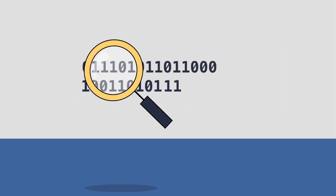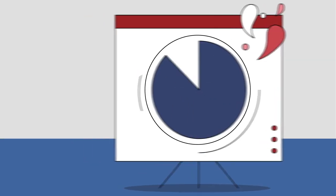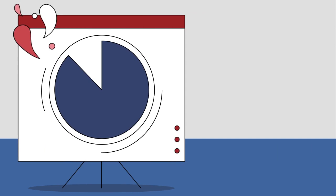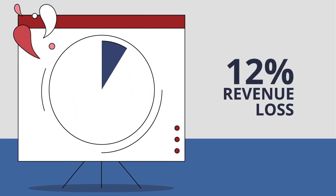Research shows that inaccurate data has a direct impact on the bottom line of 88% of companies, with the average company losing 12% of its revenue as a result.